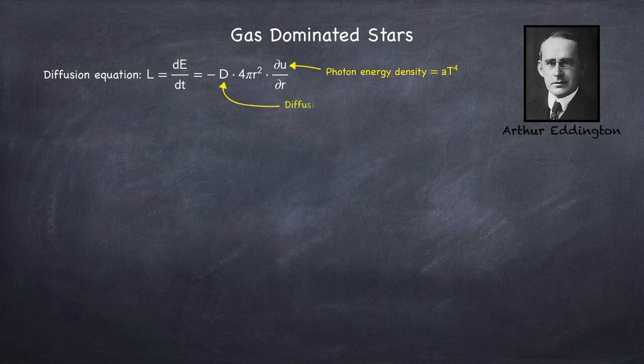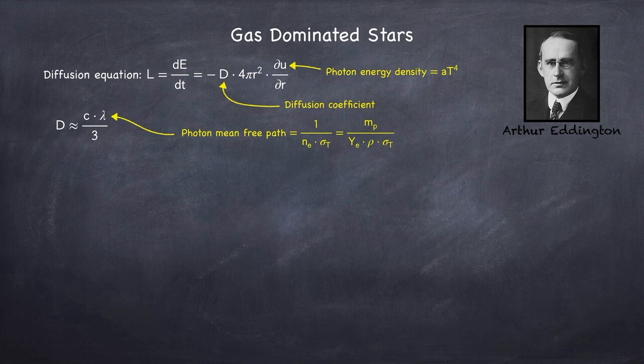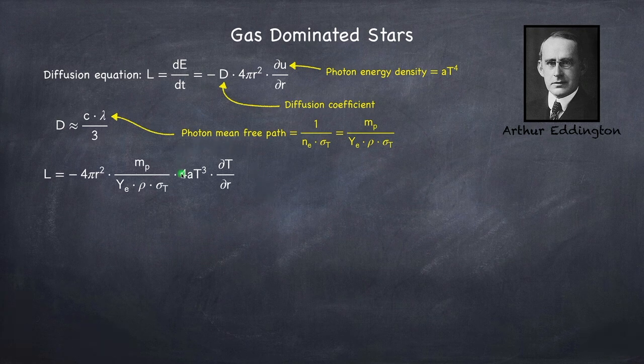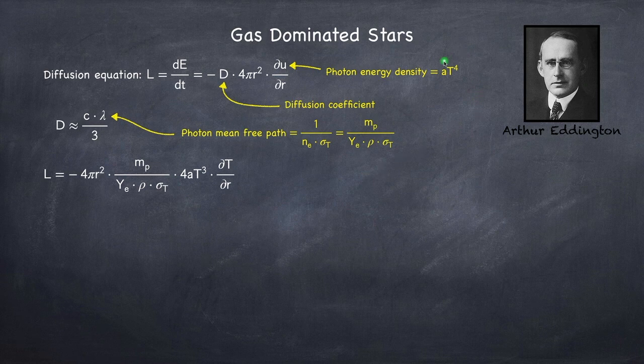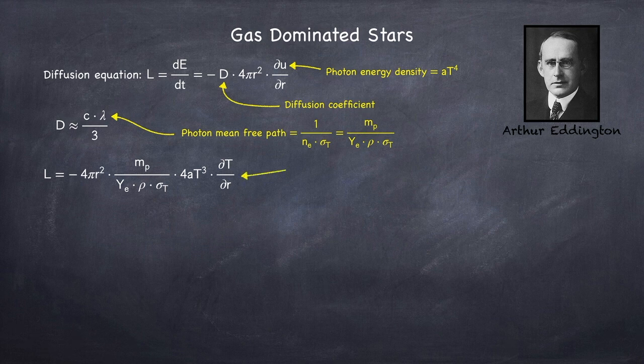This constant d here is called the diffusion coefficient, and it turns out it's approximately equal to one-third times the speed of light times the photon mean free path, which we derived in stellar physics 1b. Now, plugging everything in, we get the following expression for the luminosity, where this quantity here is the derivative of the energy density, which, recall, is just a times t to the fourth.